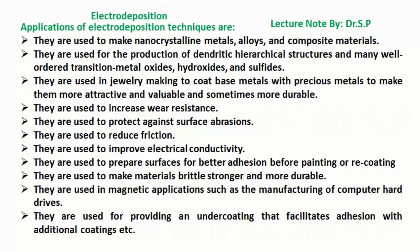Applications of electrodeposition techniques include: they are used to make nanocrystalline metals, alloys, and composite materials. They are used for the production of dendritic hierarchical structures and many well-ordered transition metal oxides, hydroxides, and sulfides.